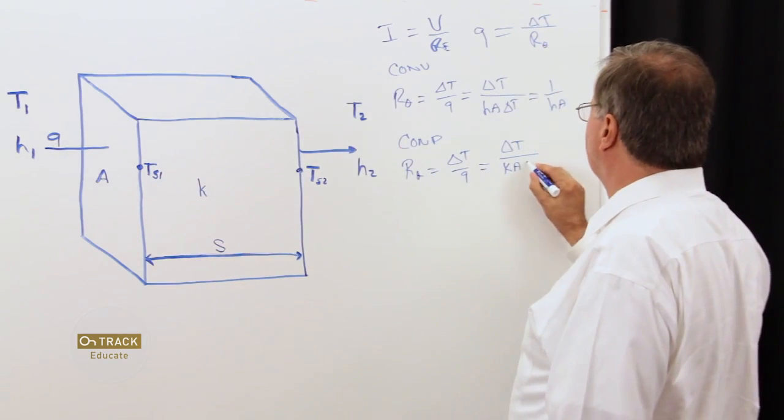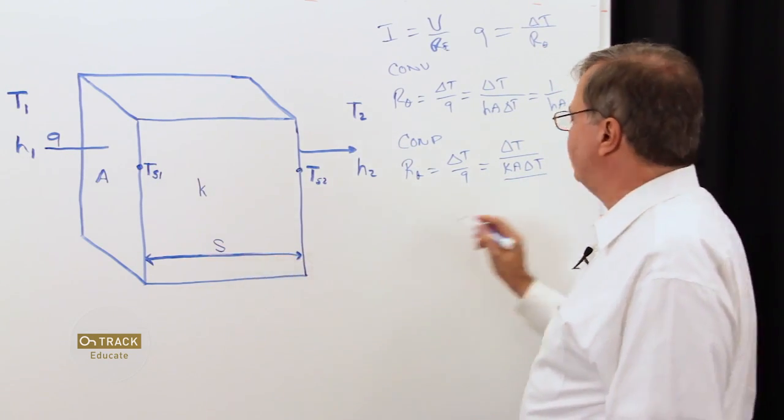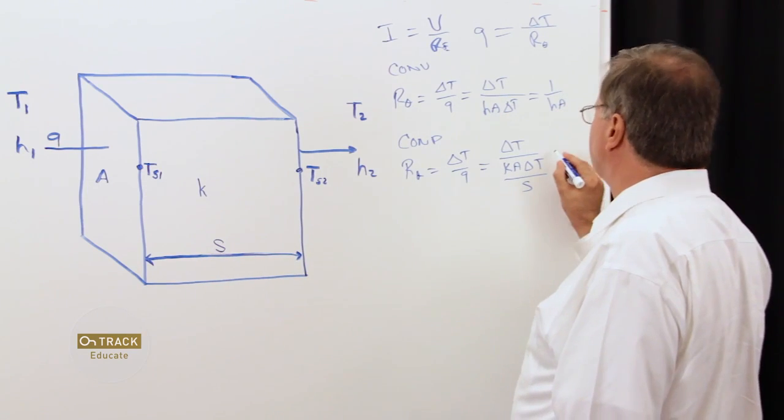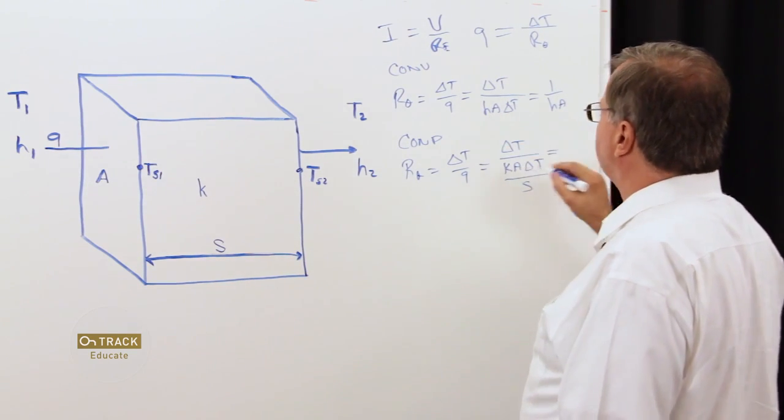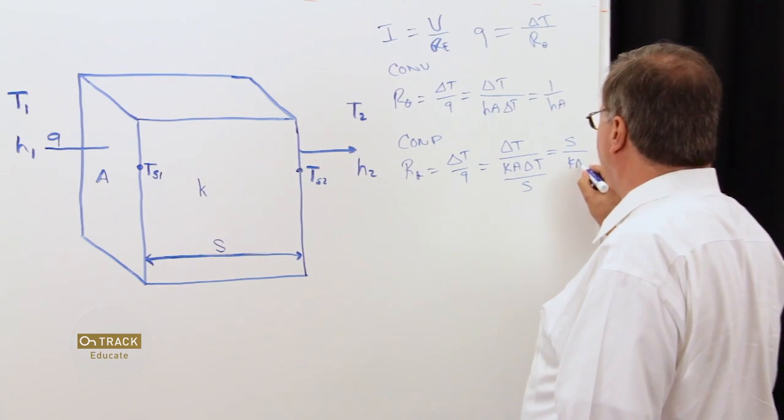times the surface area, A, delta T, over the distance traveled through our solid material. And that algebraically reduces to our distance over K, A.